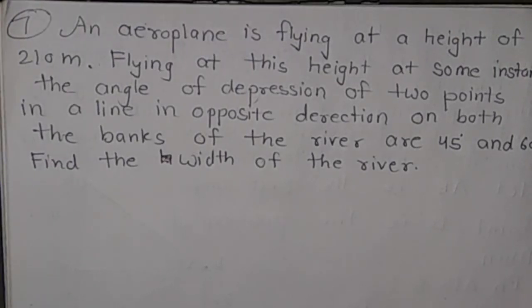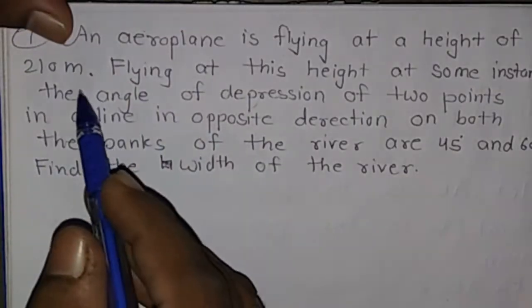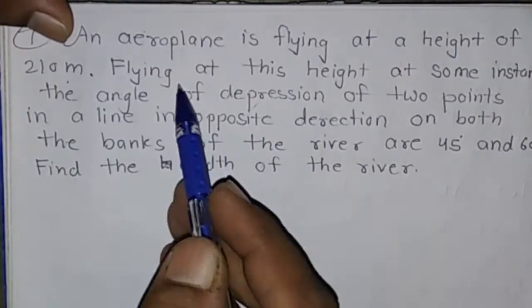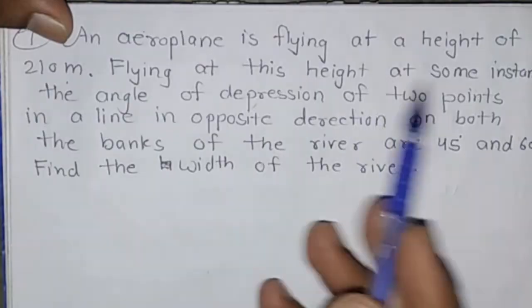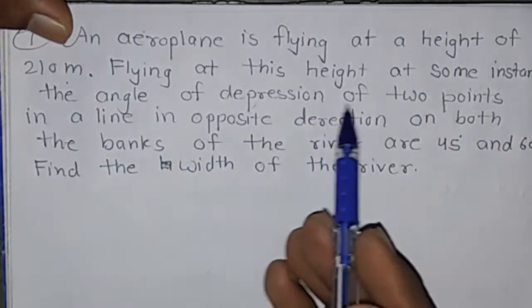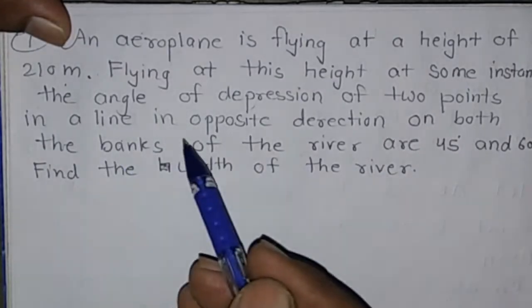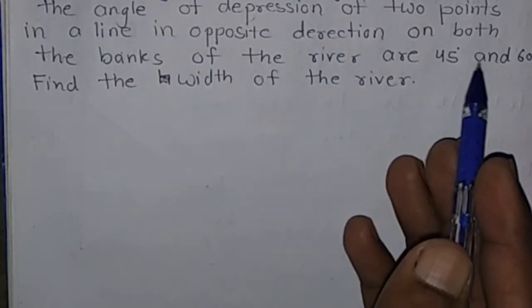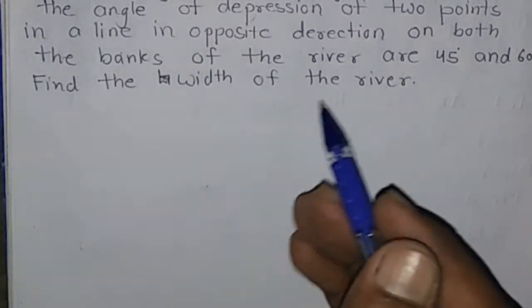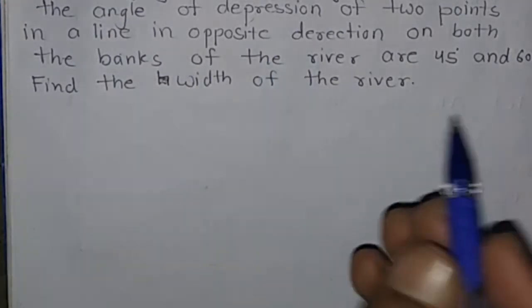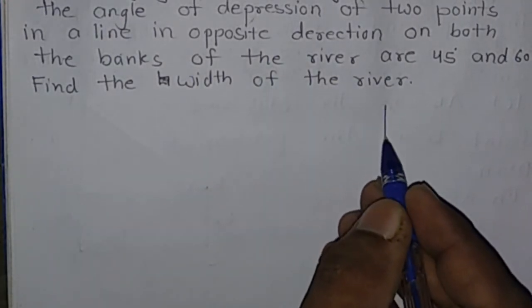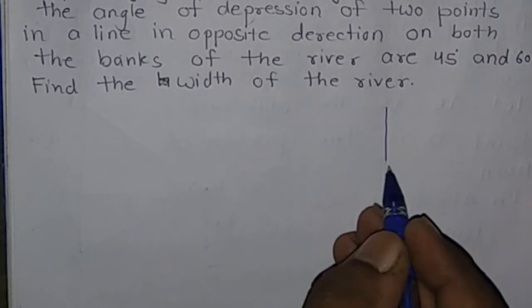Question number 7: An aeroplane is flying at a height of 210 meters. At some instant, the angle of depression of two points in a line in opposite directions on both banks of the river are 45 degrees and 60 degrees. Find the width of the river.